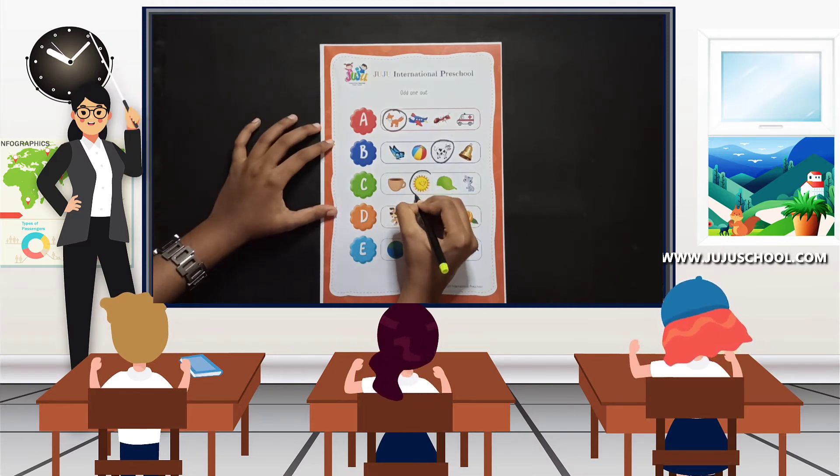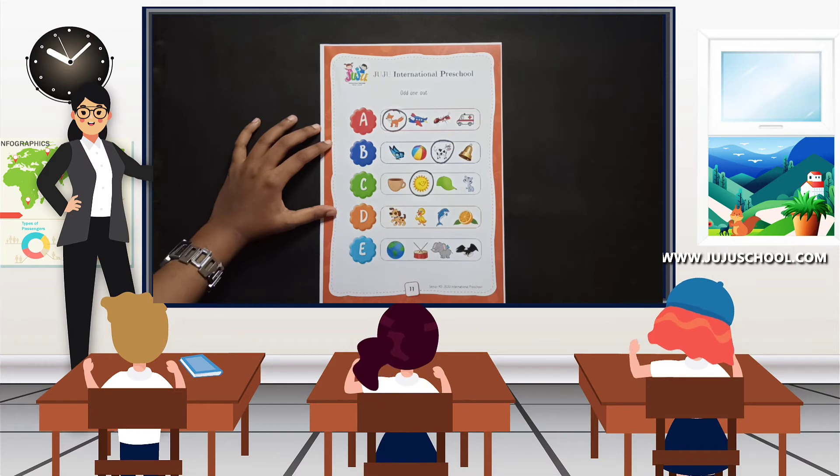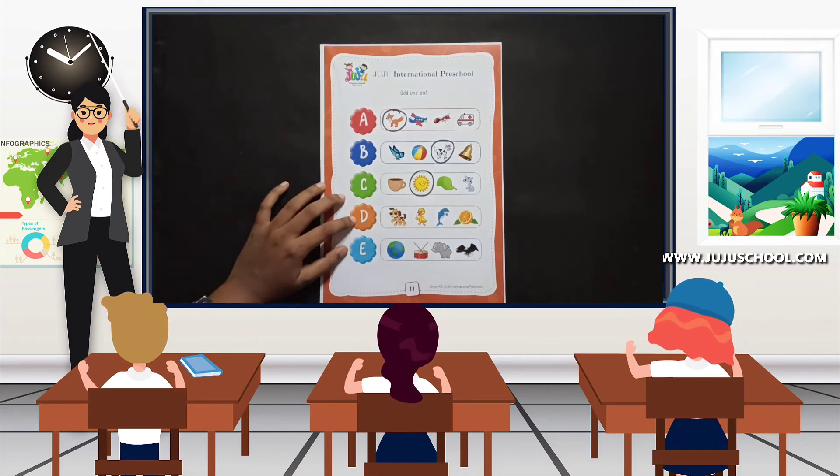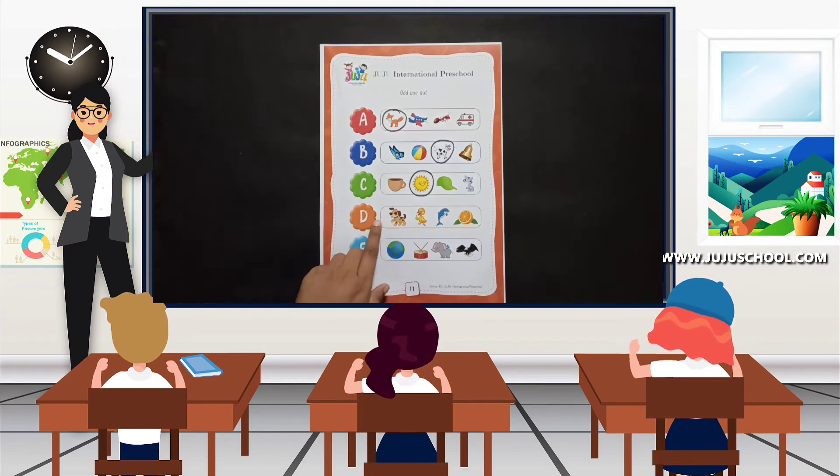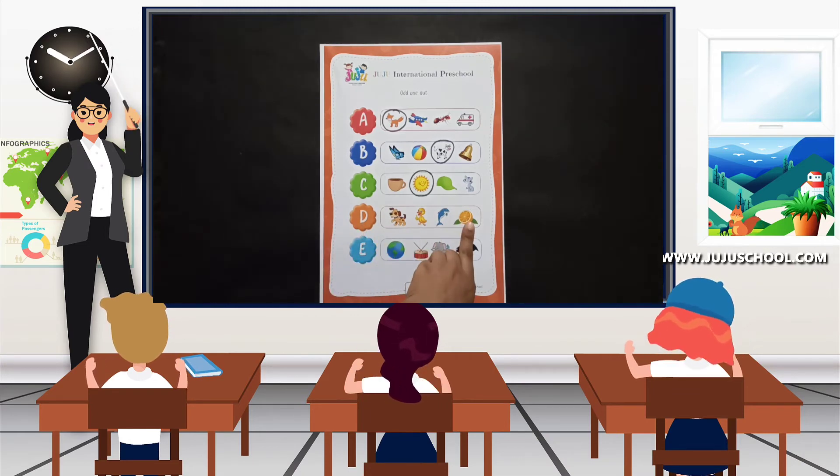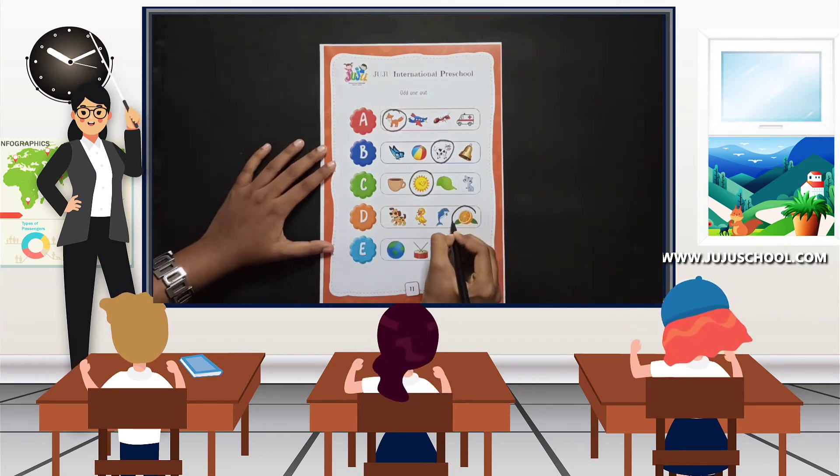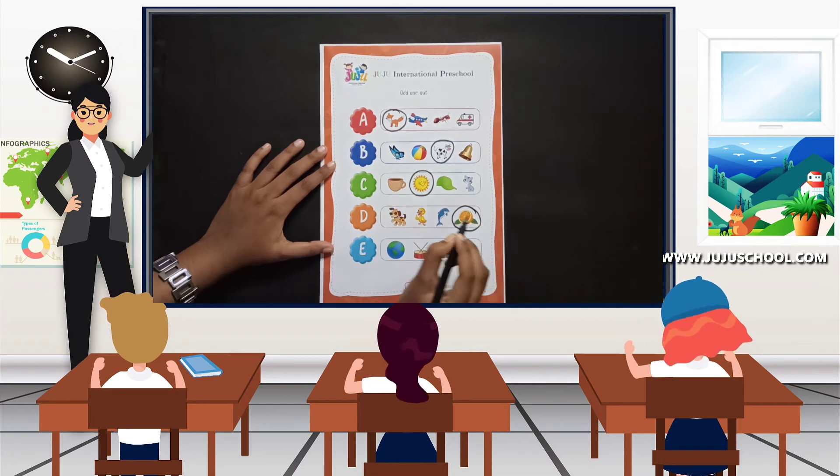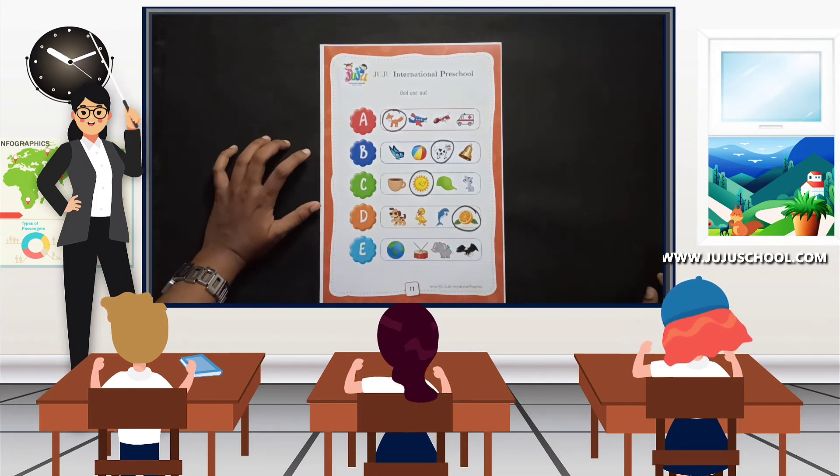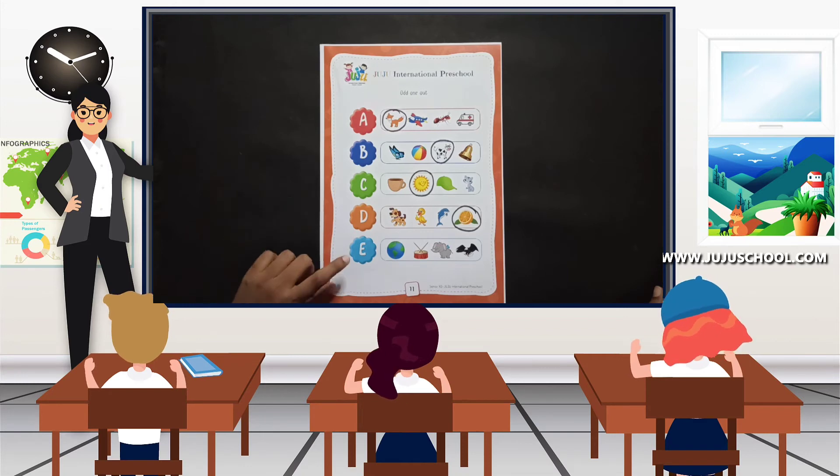Next we move on to letter D. D for dog, D for duck, D for dolphin, and D for is it orange? No. So the odd one out in this session is orange, and we are going to circle it and the odd one out is out.